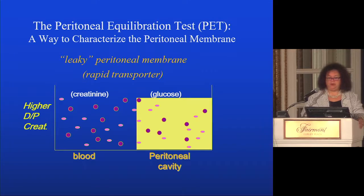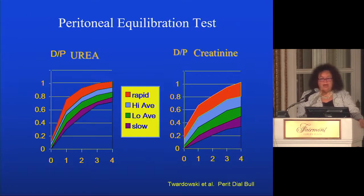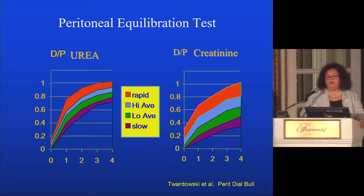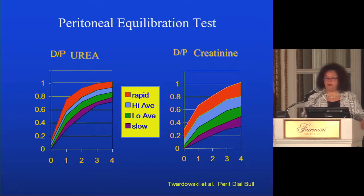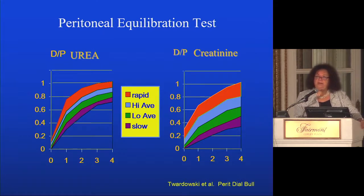A rapid transporter will have a higher D/P creatinine at the end of a four-hour dwell, while a slow transporter with fewer open capillary networks will have a lower D/P creatinine. Studies on many patients show rapid transporters in red and slow transporters in purple. Urea, being so small and easily diffusible, is not a great discriminator among different transport groups — that's why creatinine is used. Rapid transporters have a four-hour D/P creatinine somewhere between 80% and 100%.